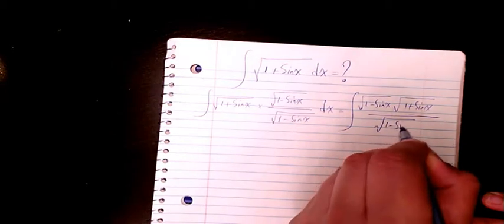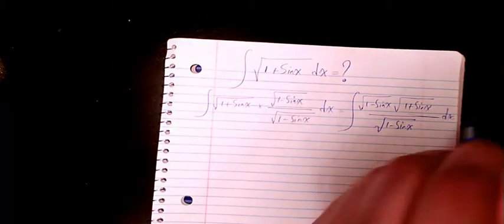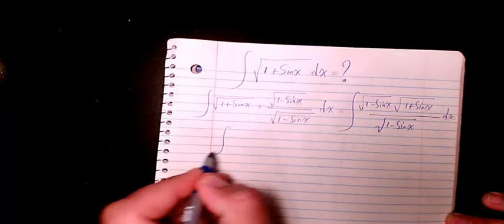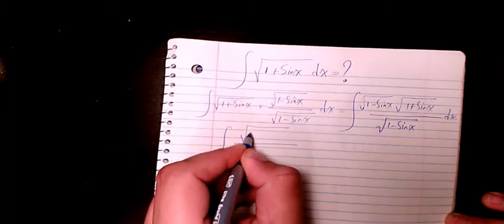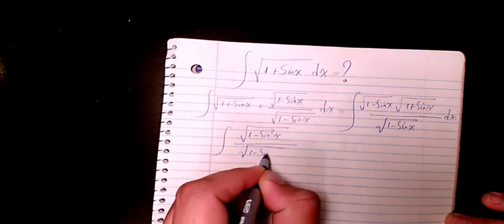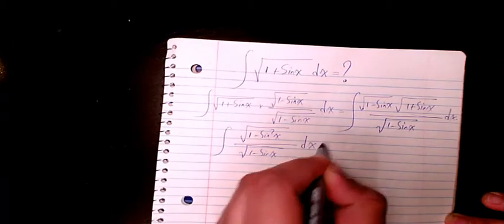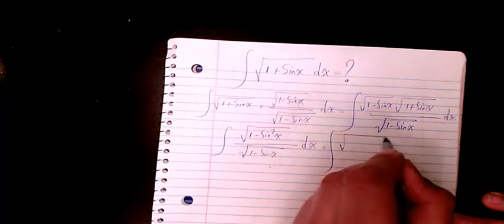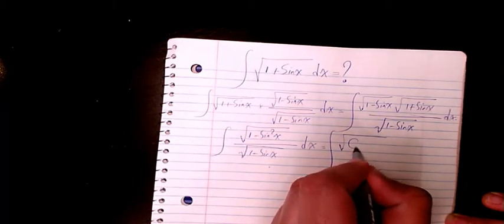That changes it to square root of one minus sine squared x divided by one minus sine x dx. That changes it to one minus sine squared, which we know is equal to cosine squared x, divided by square root of one minus sine x dx.